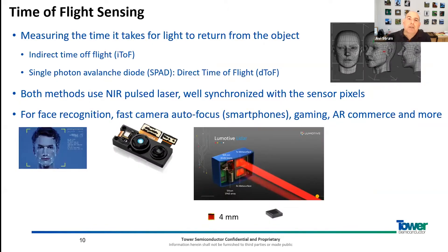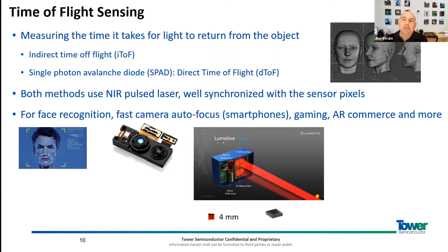Another application is time of flight, mainly used in the commercial market for cell phones — face recognition and 3D room mapping. But in sports, it could be a very interesting camera that could map and give real-time 3D mapping of the athlete or of the area around them.